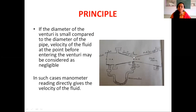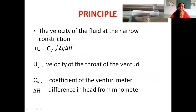If the diameter of the Venturi is small compared to the diameter of the pipeline, then the velocity of the fluid at the point before it enters the Venturi may be considered negligible. In such cases, the manometer reading will directly give the velocity of the fluid passing through the Venturi. By using the formula uv = cv × √(2g·Δh), we can determine this velocity. Here, uv represents the velocity at the throat of the Venturi, cv represents the coefficient of the Venturi meter, and Δh is the difference in pressure head from the manometer.